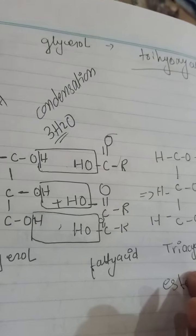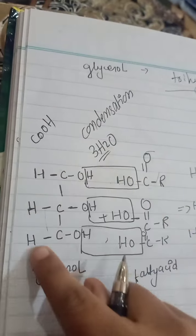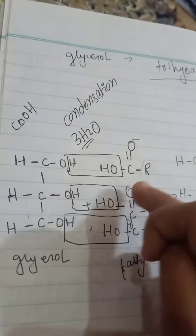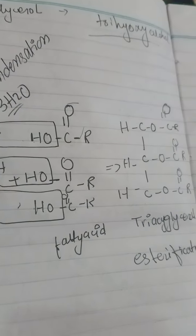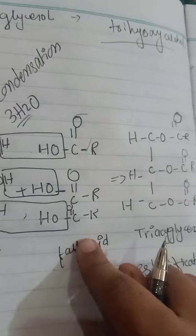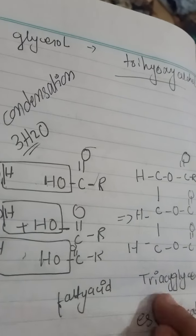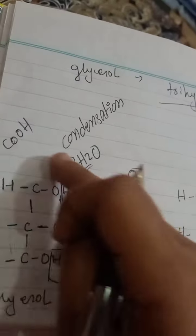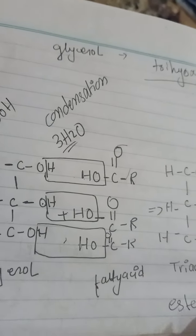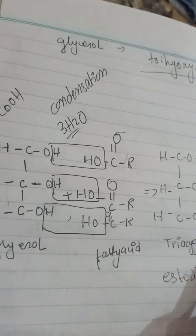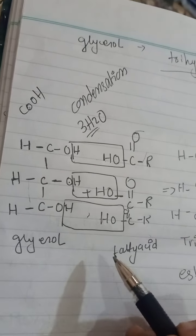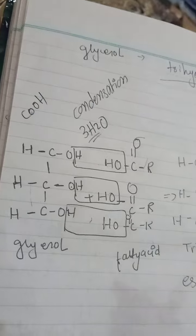Triacylglycerol means there is one glycerol and three fatty acids. The water removed is 3H2O. That is the formation of triacylglycerol — one glycerol and three fatty acids. That is called the esterification bond. The triacylglycerol is also a lipid — a fatty acid that is a lipid, and glycerol is the alcohol.